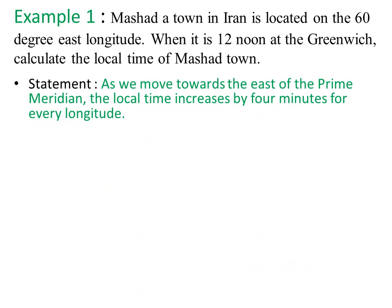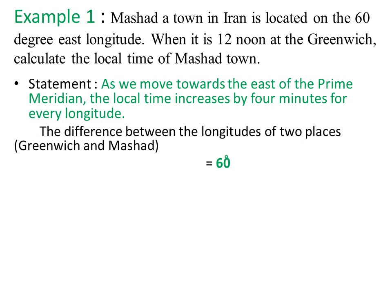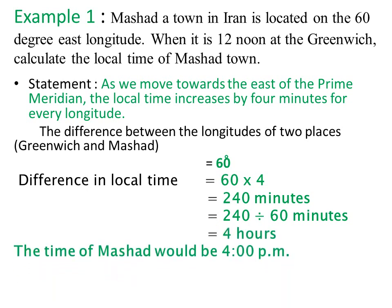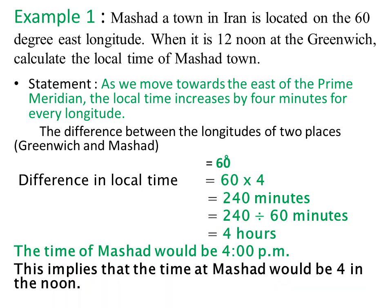As we move towards the east of the prime meridian, the local time increases by 4 minutes for every degree of longitude. The difference between the longitude of Greenwich and Mashar is 60 degrees. Difference in local time = 60 × 4 = 240 minutes. 240 minutes ÷ 60 minutes = 4 hours. Therefore, the time at Mashar would be 4 pm.